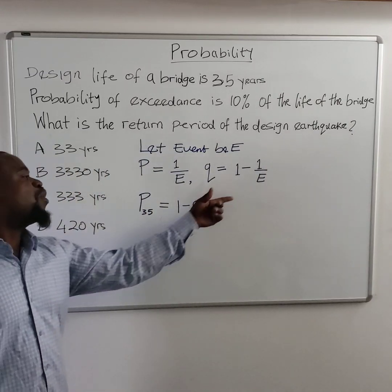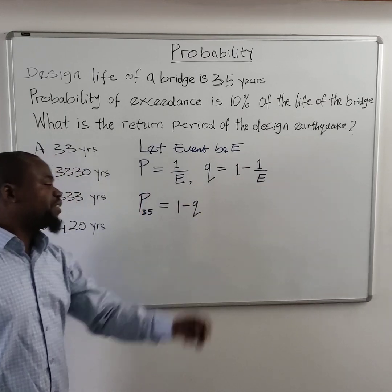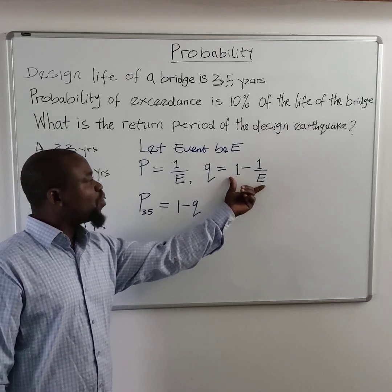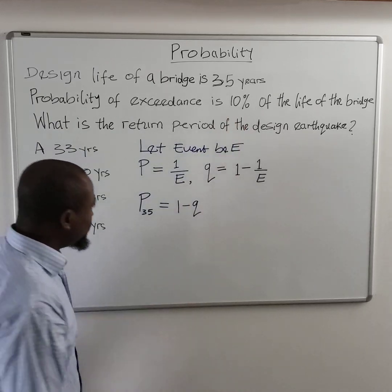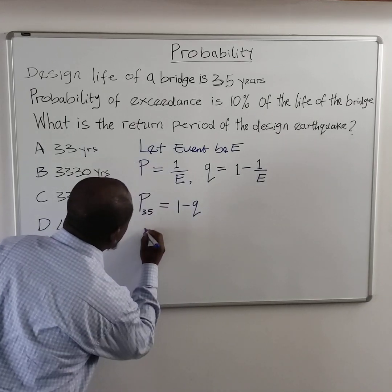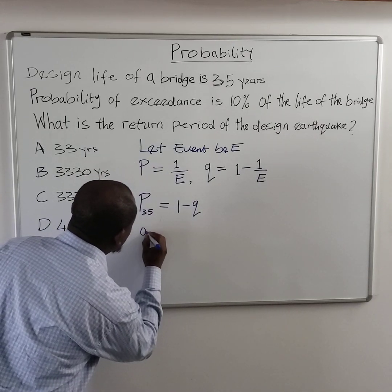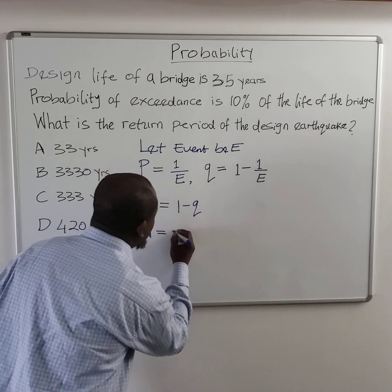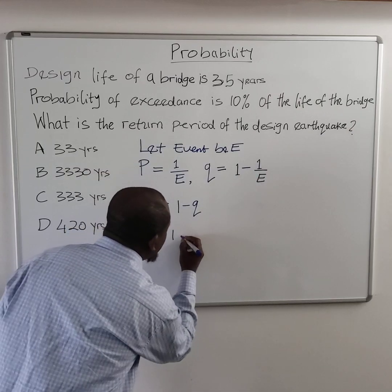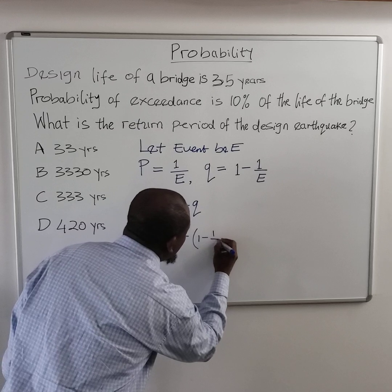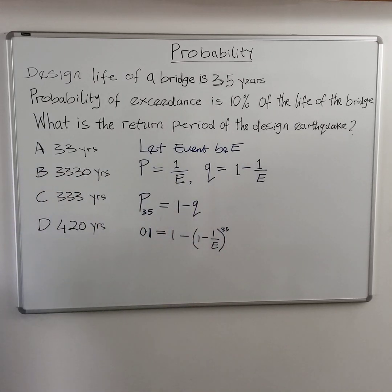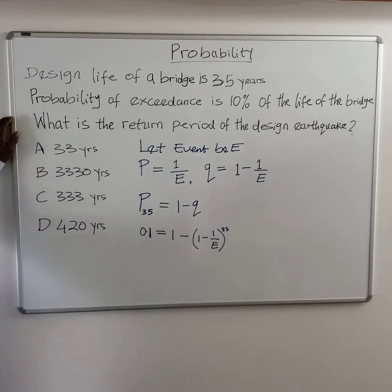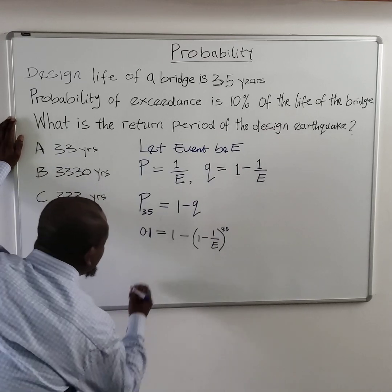Now, what is the probability of occurrence for 35 years? That is given by 1 minus the probability of non-occurrence for one year raised to the power of 35. We are given this probability as 10%, so substituting: 0.1 equals 1 minus (1 minus 1/E) raised to the 35th power.